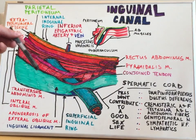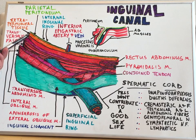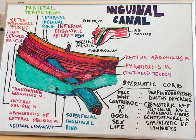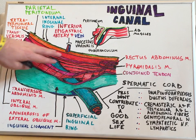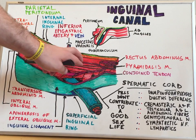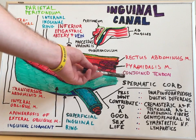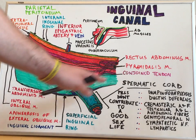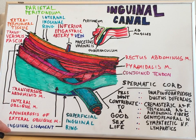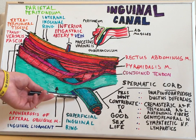The posterior boundary is made up of this red layer here called the transversalis fascia. The roof, or superior boundary, is made up of the internal oblique muscle, the transversus abdominis muscle, as well as a portion of the transversalis fascia. These muscles split where the spermatic cord comes through, form a roof over the canal, and then their fibers join together — this is called the conjoint tendon. The floor of the canal is the top portion of the inguinal ligament, seen here in blue.